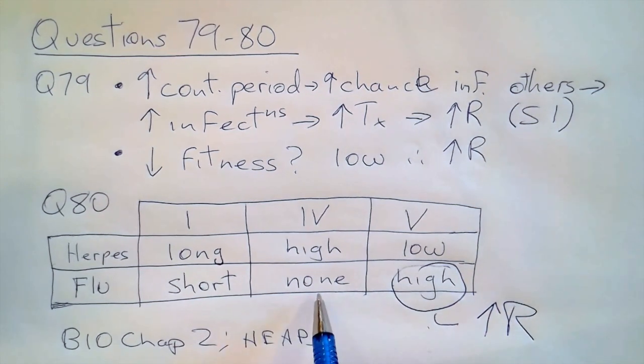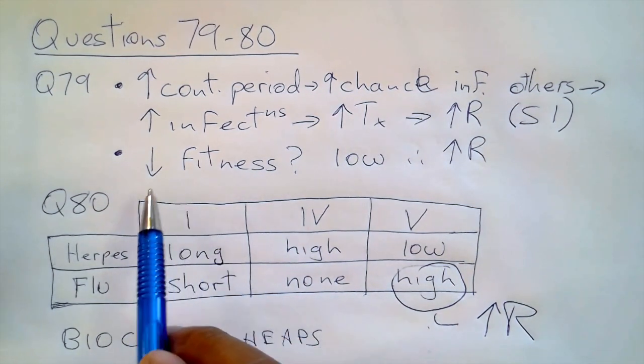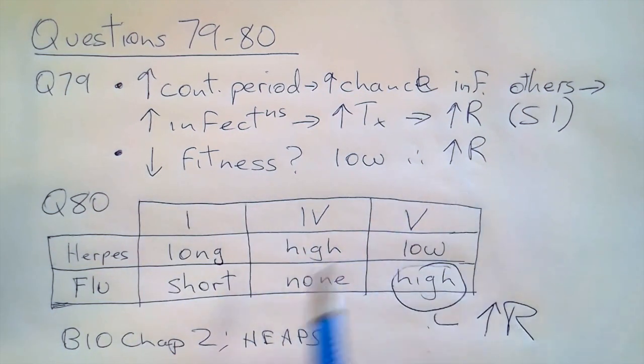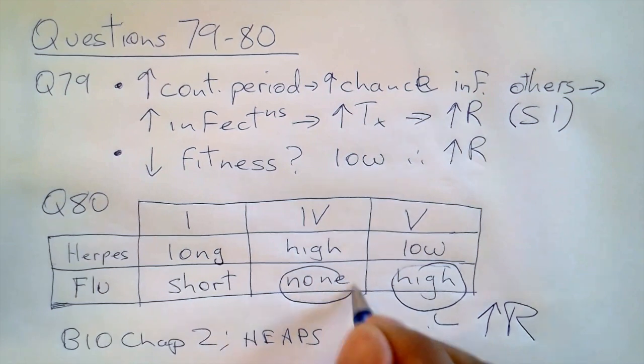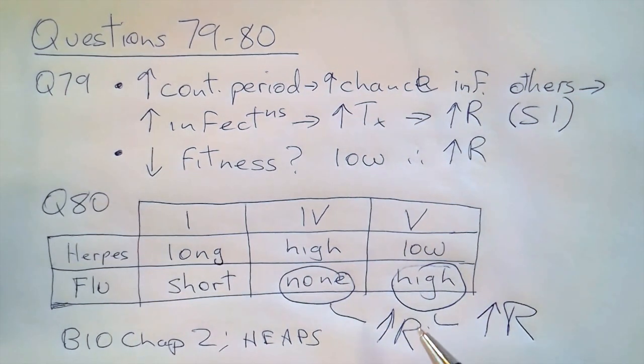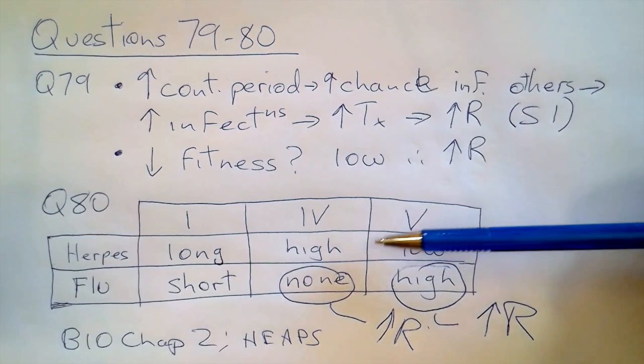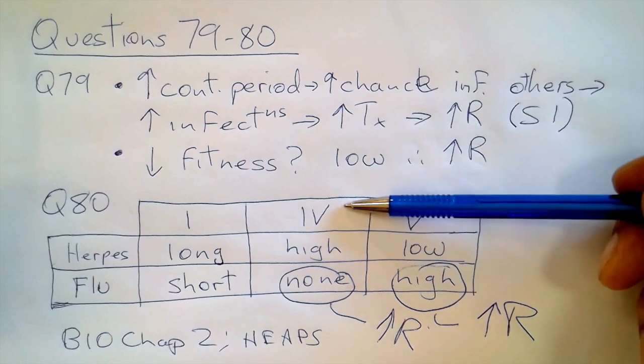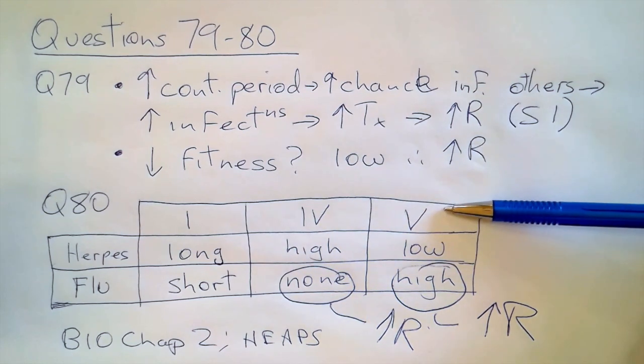And with regards to the fitness, we already established that low fitness leads to high resistance. So this is lower fitness. So this is going to lead to high resistance. And therefore, relatively, herpes will have resistance evolution much slower because of Roman numeral four and because of Roman numeral five.